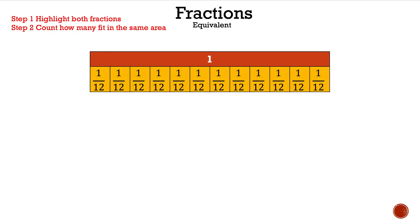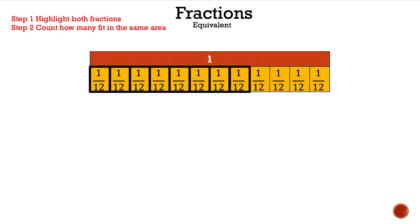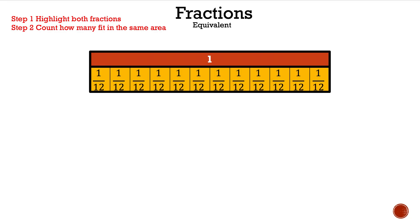And then we're comparing one to the twelves. So how many equal parts are we going to have for one? Let's count: one, two, three, four, five, six, seven, eight, nine, ten, eleven, twelve. So that means there are twelve equal parts to get one. And if you guessed twelve, well done.